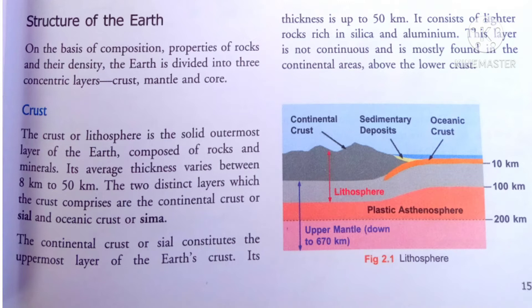This layer is not continuous and is mostly found in the continental areas above the lower crust. Similarly, the oceanic crust is mostly found in the oceanic areas above the lower crust.